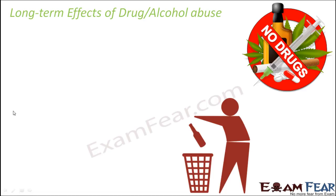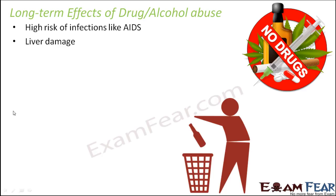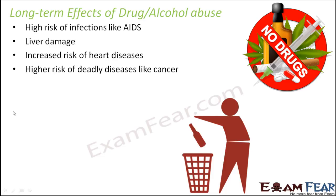Looking at the long-term effects of drug or alcohol abuse: there is a high risk of infections like AIDS, because someone under the influence of addiction is not in full consciousness and may commit sexual crimes. As AIDS is transmitted through sexual contact, the risk is very high. Liver damage occurs because too much intake of alcohol directly affects the liver. There is also an increased risk of heart diseases, as tobacco - whether smoked or chewed - directly affects the cardiovascular system.